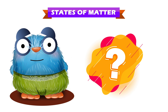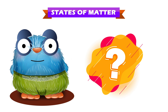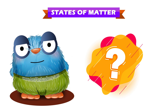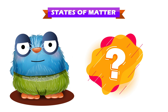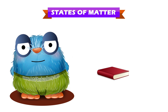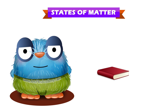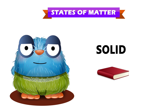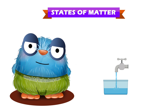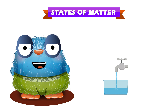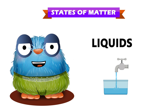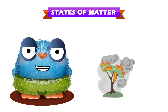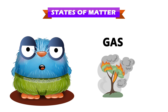Now I will tell an object and you need to tell me which state of matter it belongs to. Book is solid state of matter. Water is liquid state of matter. Smoke is gas state of matter.